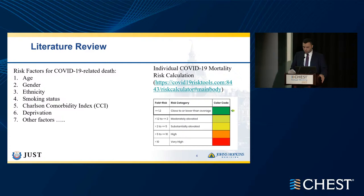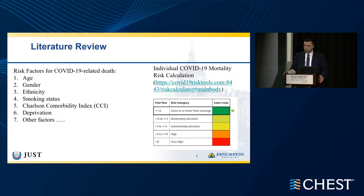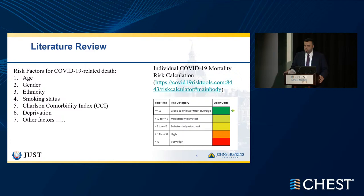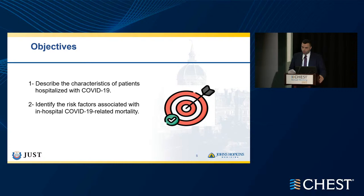Recently, researchers from Johns Hopkins University launched a tool to estimate individual COVID-19 mortality risk for the general population. However, most of these risk factors have been proposed based on studies conducted in the U.S., U.K., China, or other high-income developed countries, while evidence from middle or low-income countries is scarce. In this study, we aimed to fill this literature gap by describing the characteristics of patients hospitalized with COVID-19 and identifying risk factors associated with in-hospital COVID-19-related mortality.